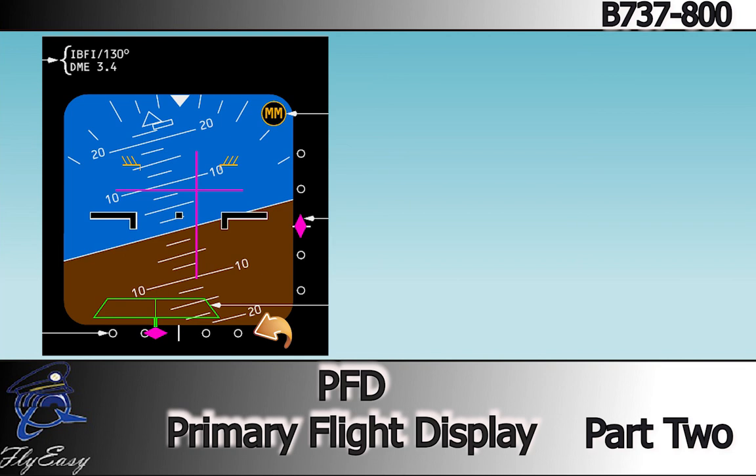The localizer scale appears when a valid frequency is tuned. The localizer pointer appears when the localizer signal is received, and indicates localizer position relative to the aircraft lateral position. The pointer fills in solid when it's within two and a half dots from the center of the scale.